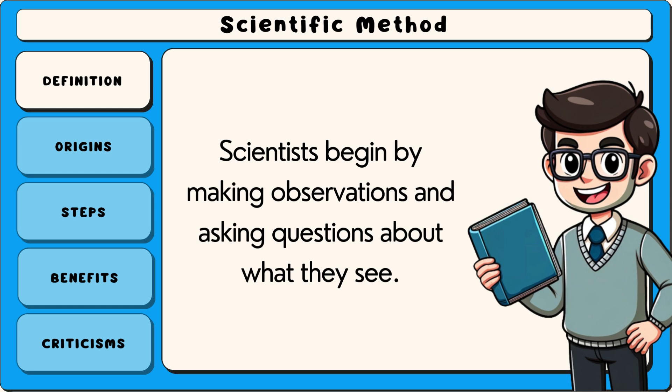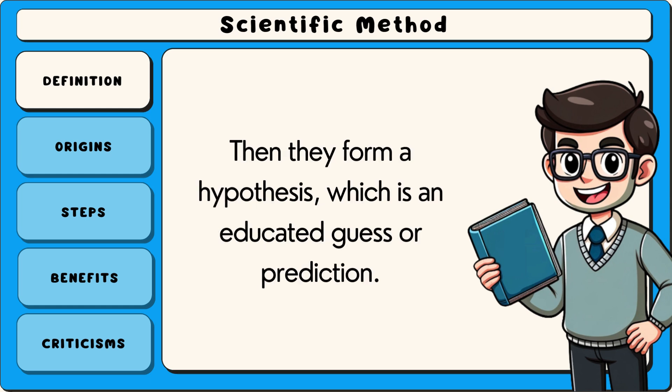Scientists begin by making observations and asking questions about what they see. Then they form a hypothesis, which is an educated guess or prediction.